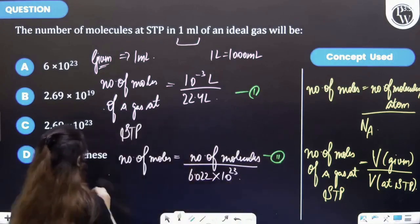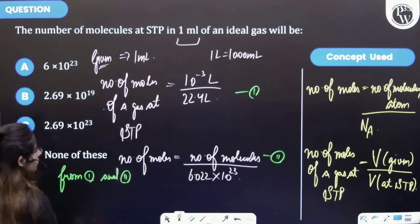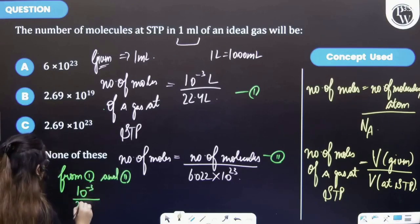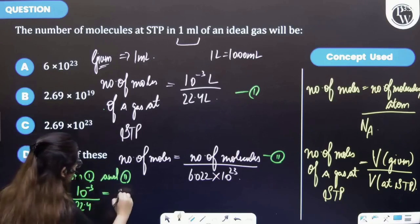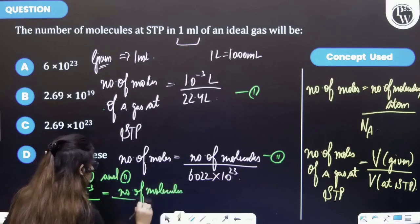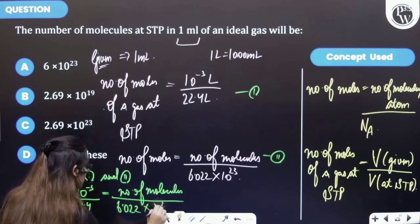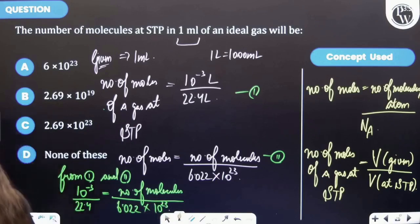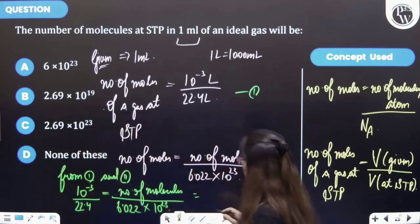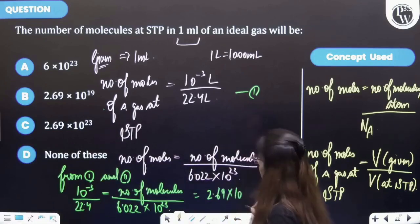So from first and second, I am having 10^-3 divided by 22.4 equals number of molecules divided by 6.022 × 10^23. So we can get the number of molecules. And so therefore on solving you will be getting number of molecules to be 2.69 × 10^19.